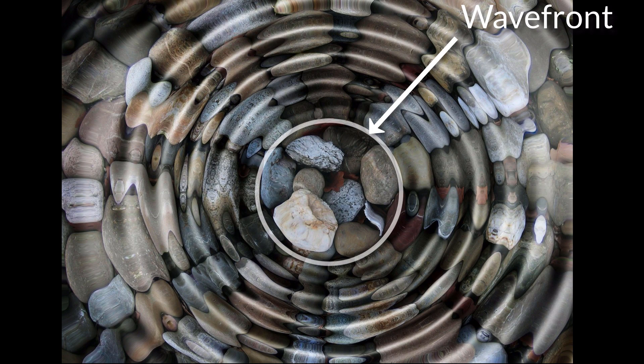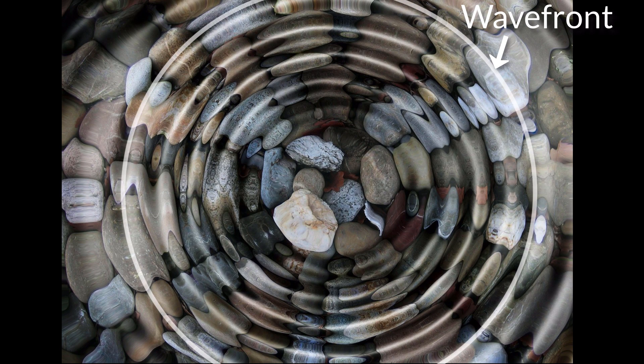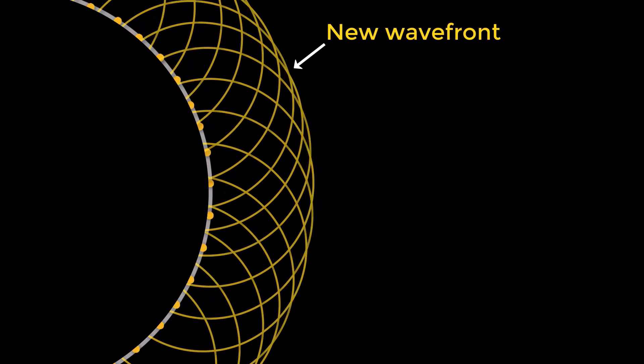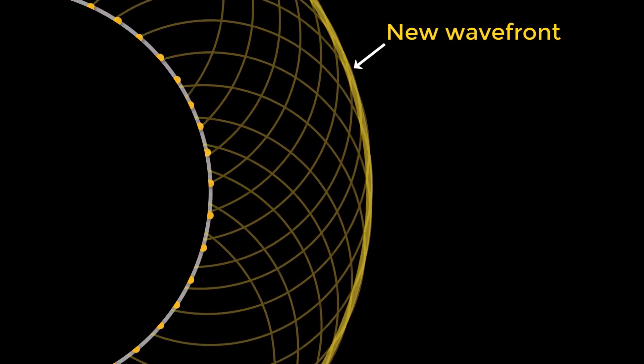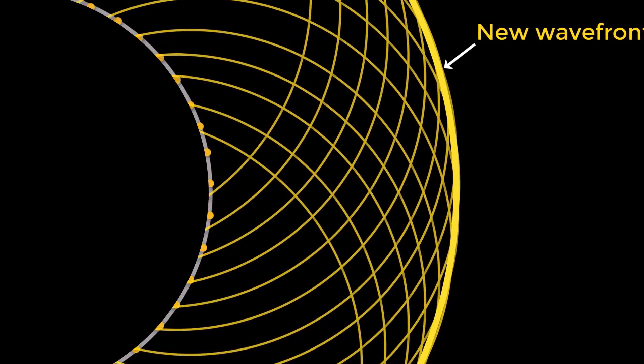Huygens says light is a wave and gives us a way to figure out how the wavefronts evolve. A wavefront can be thought of as a set of particles which are oscillating in sync with each other. So if this was light, then according to Huygens, every point on this wavefront acts as a source for secondary waves, and the envelope of these secondary waves — a common tangent to them — represents a new wavefront.